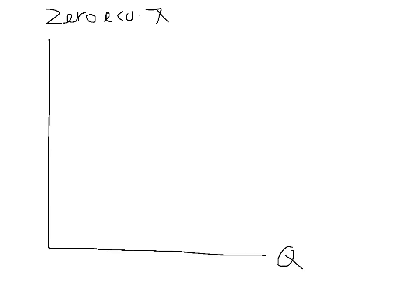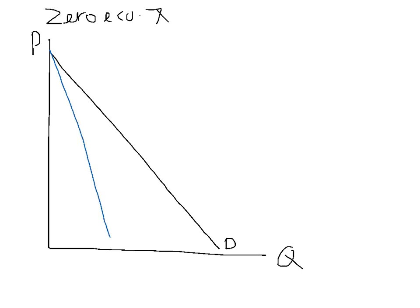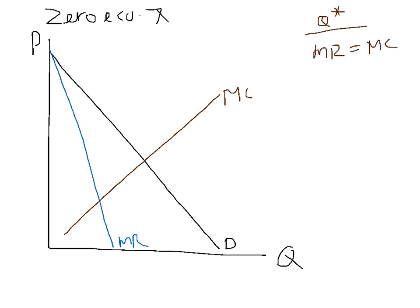Draw your graph. Draw your demand curve. Draw your marginal revenue curve. Draw your marginal cost curve. To find Q star, we set marginal revenue equal to marginal cost. Over here, Q star. To find price, we move up our demand curve. P star.